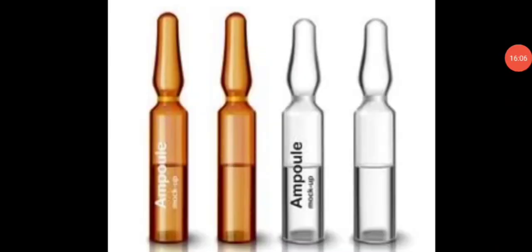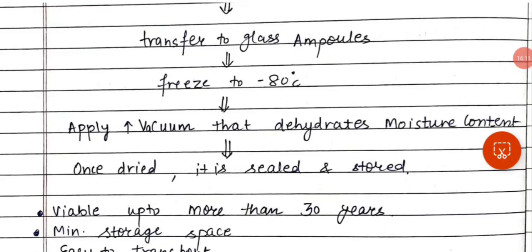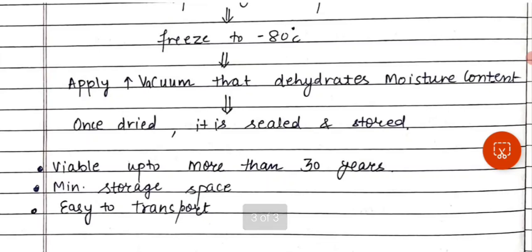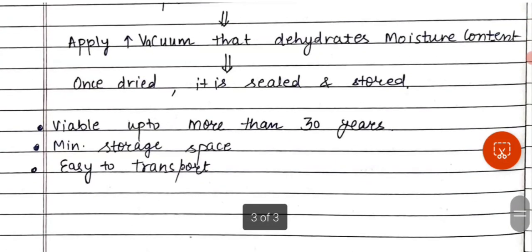Freeze drying involves two steps: freeze and dry. We freeze to minus 80 degrees Celsius and then apply a very high vacuum, which sucks all the water from the ice without passing through a liquid phase — complete moisture is removed by dehydration. Once dry, the ampoules are sealed and stored. The microorganism can be preserved for 30 years. The advantages are that the culture is viable, genetically stable, and contamination-free.